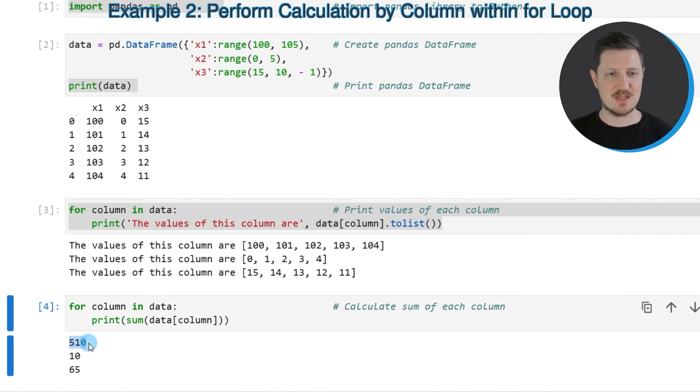In this case the sum of the values in the first column is equal to 510, the second column has a sum of 10, and the third column has a sum of 65.